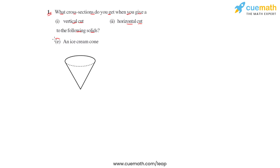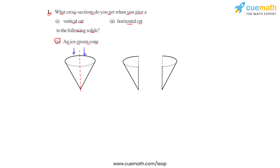Next we have an ice cream cone. If we cut it vertically along this line, the ice cream cone is divided into two parts. The cross section is a triangle, but the base is curved because of the base of the ice cream cone.